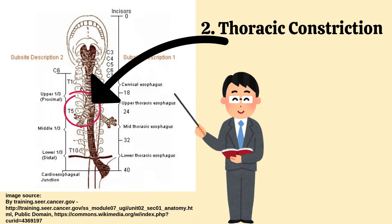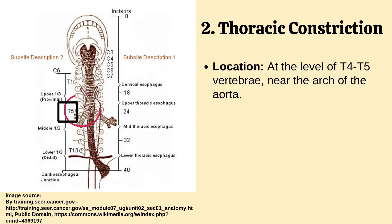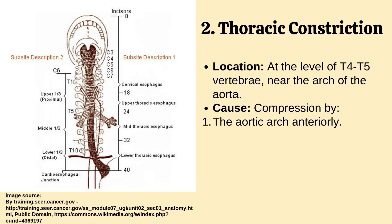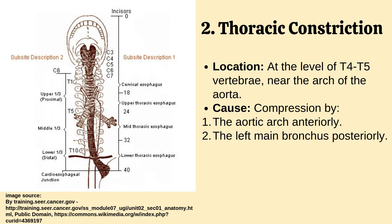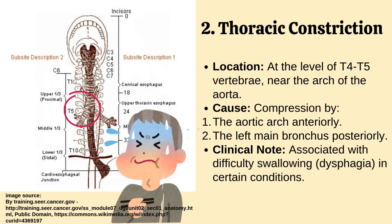Number 2: Thoracic constriction. It is located at the level of T4 to T5 vertebrae, near the arch of the aorta. It is caused by compression by the aortic arch anteriorly and the left main bronchus posteriorly. Clinical note: it is associated with difficulty swallowing, dysphagia, in certain conditions.